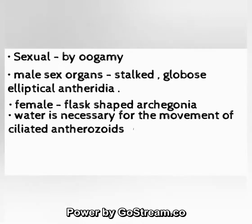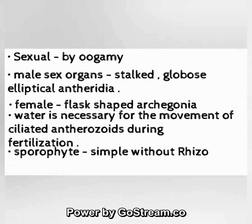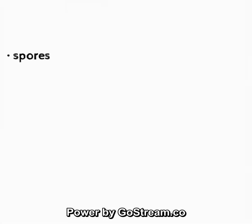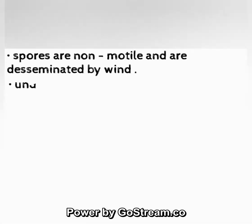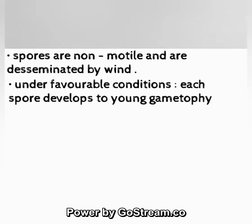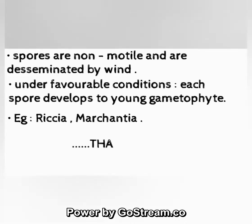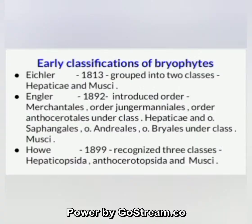The sporophyte is simple, without rhizoids, stem, or leaves. Spores are non-motile and are disseminated by wind. Under favorable conditions, each spore develops into a young gametophyte. Examples include Riccia and Marchantia.